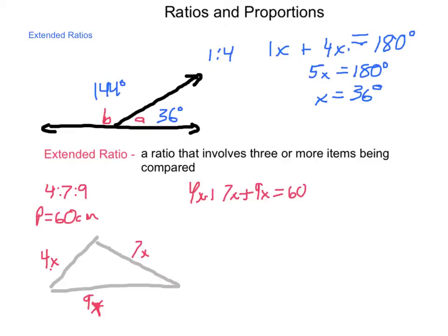Now, we can go through and solve for x and then find the length of each side. Because, perimeter is simply the sum of all the sides. So, 4x plus 7x plus 9x is equal to 60 centimeters. Combining our like terms, 4 plus 7 is 11, plus 9 is 20. So, we have 20x equals 60. Using our division property of equality, dividing both sides by 20, we come out with x equals 3.